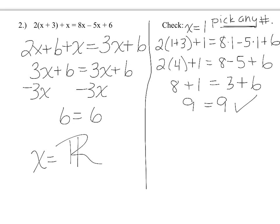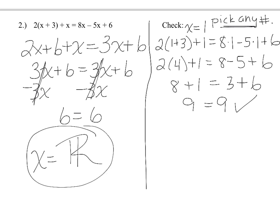For number 2, you should have gotten that all real numbers is the solution. You can — and have to — check this using any number. I picked 1, and when I did, both sides of the equation equaled 9. If you picked 2, you'd get a different number, but both sides should still equal each other. I knew the answer was all real numbers when I had 3x plus 6 equals 3x plus 6, but continue collecting to show the variables cancel and you're left with a true statement.